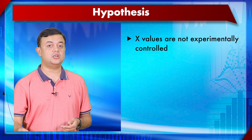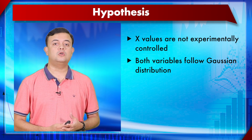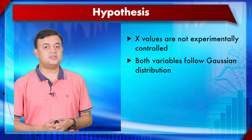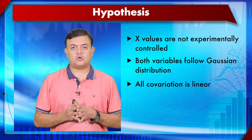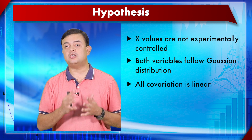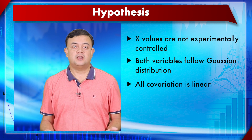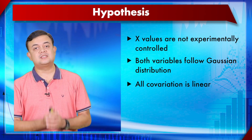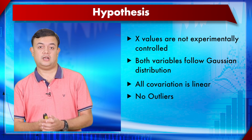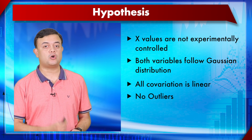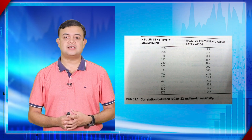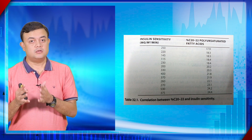Seventh: both variables must follow a Gaussian distribution — that's why this is a parametric measurement. Eighth: all co-variation occurs on a linear scale — if the correlation is not linear, Pearson's will not reveal it. Ninth: no outliers. If there are outliers, perform Grubbs' test or a similar method to identify and remove them prior to analysis. Tenth: the data must be accurate.